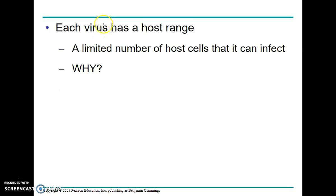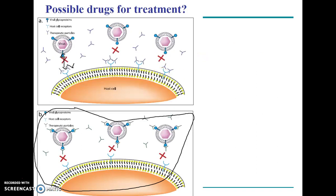Because of this receptor specificity, each virus can only infect certain types of cells. For example, if you have a cold caused by a virus, you cannot give the cold to your dog, and your dog cannot give its cold to you. Viruses can only infect cells where the glycoprotein matches the receptor — if it doesn't match, it can't infect. Certain viruses can only infect certain types of organisms and certain cell types. For example, HIV — human immunodeficiency virus — can only infect immune cells. These are called host cells, and the virus is limited to cells that have the matching receptor.